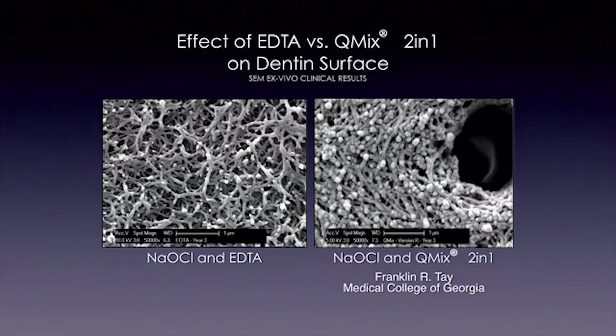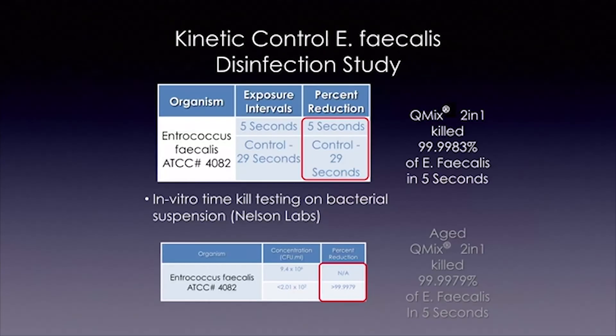In direct comparison to 17% EDTA, QMix — even two years old — was significantly better at removing debris and biofilm and clearing access to the tubules. Franklin Tay at the Medical College of Georgia stated that QMix also completely removes the smear layer and smear plugs. It is slightly less aggressive than EDTA with less demineralization of intact dentin collagen. A 90-second final rinse comparison shows QMix clearly leaves the area much more intact, with less collagen fibril shrinkage — subsequently helping prevent bacterial seepage. Its antibacterial efficacy is incredible: five seconds of exposure to E. faecalis results in 99.9983% destruction of that colony.